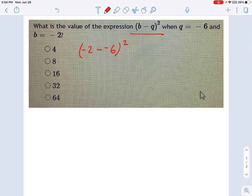And that looks kind of dicey, so let's try to simplify it. Minus negative 6, remember, those negatives cancel out and you get a positive. So this is negative 2 plus 6 squared, and that's 4 squared, and that's 16.